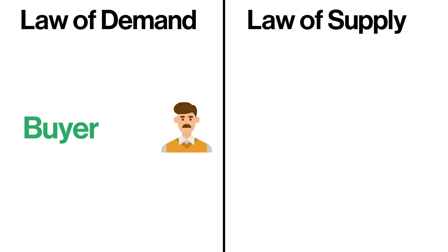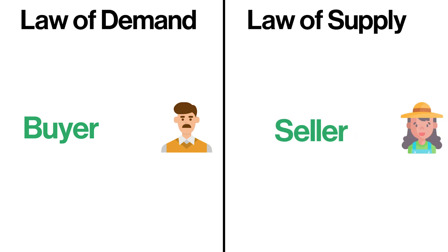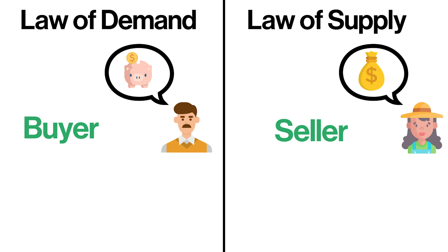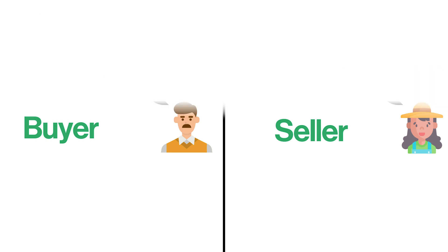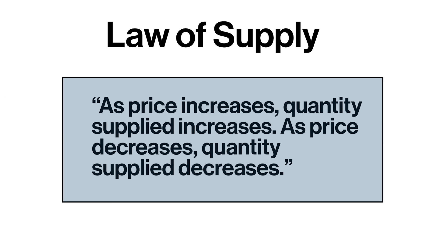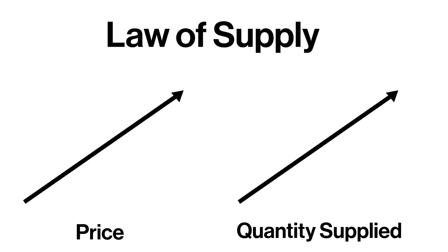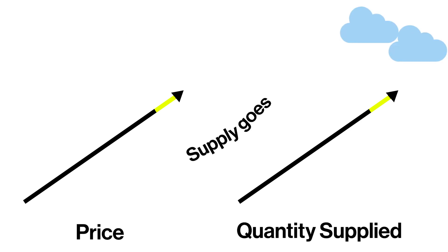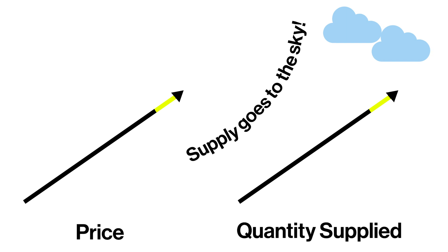For the law of demand we're thinking from the perspective of the buyer; for the law of supply we're thinking from the perspective of the seller. If the buyer wants to buy goods for as cheap as possible, then the seller wants to sell goods for as expensive as possible — they have conflicting interests. Here's the definition of the law of supply: as price increases, quantity supplied increases; as price decreases, quantity supplied decreases. There's a positive correlation between price and quantity supplied. Think of it as supply goes to the sky.